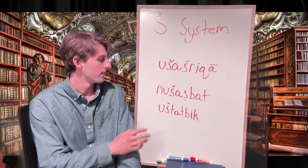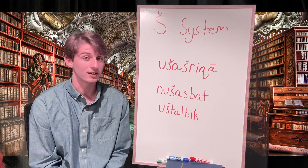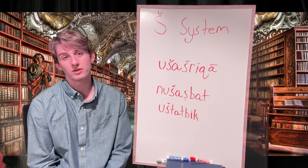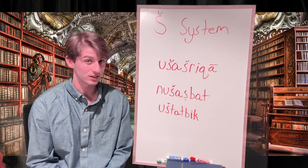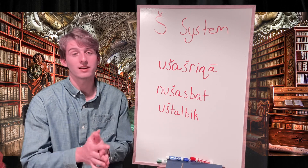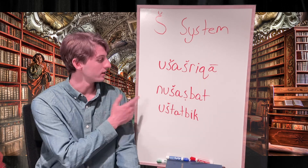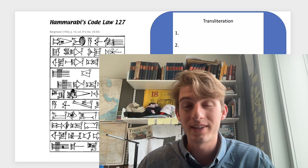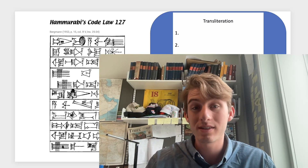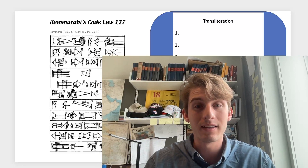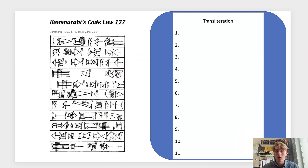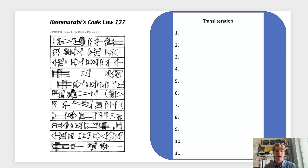As you can see, there are many different variations when translating the Sheen system. The best thing we can do is look at an actual Akkadian text to get a feel for translating a full sentence. Here we have Law 127 from Hammurabi's Code. To make our transliteration, we're going to look at the drawing done by Bergman in the Codex Hammurabi Textus Primagenius, published in 1953. We'll identify the values of each cuneiform sign to form our transliteration, which we can then normalize and translate.